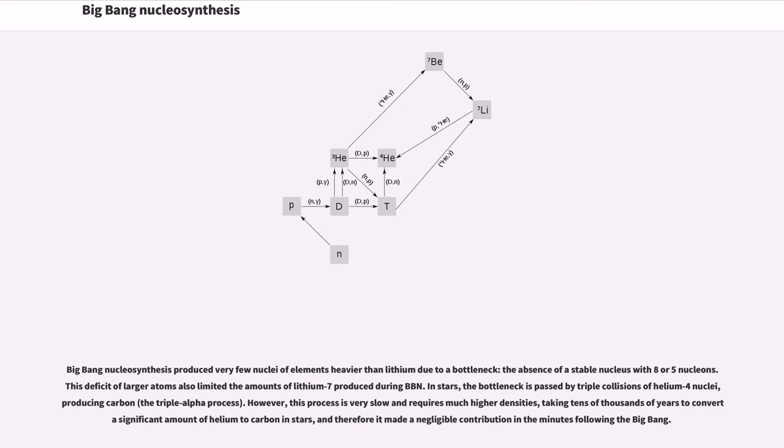Big Bang nucleosynthesis produced very few nuclei of elements heavier than lithium due to a bottleneck: the absence of a stable nucleus with eight or five nucleons. This deficit of larger atoms also limited the amounts of lithium-7 produced during BBN. In stars, the bottleneck is passed by triple collisions of helium-4 nuclei, producing carbon. However, this process is very slow and requires much higher densities, taking tens of thousands of years to convert a significant amount of helium to carbon in stars, and therefore it made a negligible contribution in the minutes following the Big Bang.